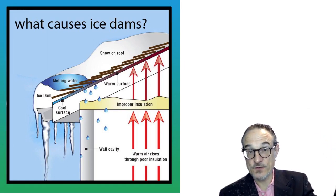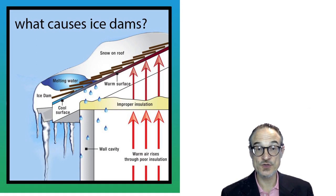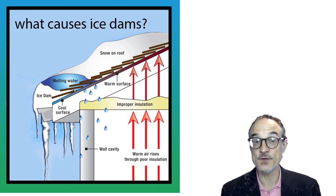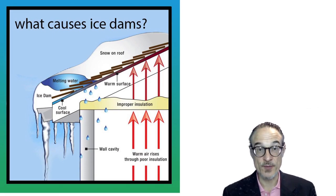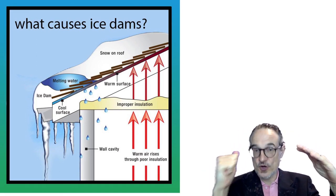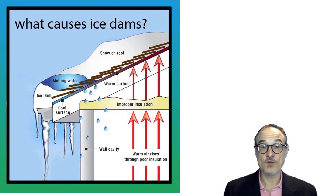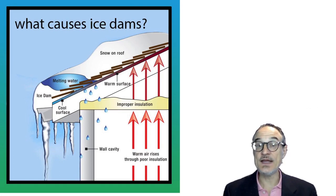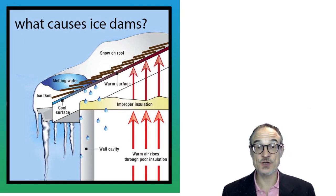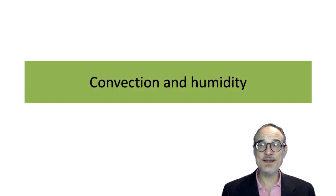At the edge of the roof there's no heat, so the water refreezes and forms a big block of ice — an ice dam. Water from the melting snow above then pools behind this dam. The roof handles water flowing by gravity fine, but the pooled water starts leaking into the house. This is a danger when you heat a poorly insulated house in a cold, snowy climate.